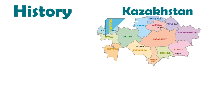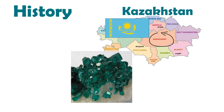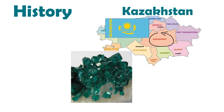First of all, let's find out about the history of dioptase. In the 18th century, at the mine in Karaganda province, Kazakhstan, copper miners thought they had discovered an emerald deposit.